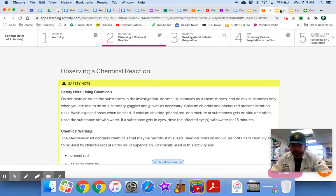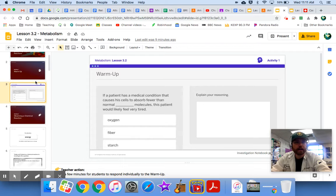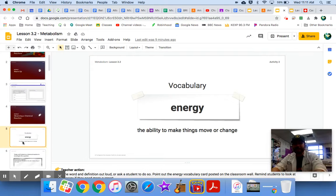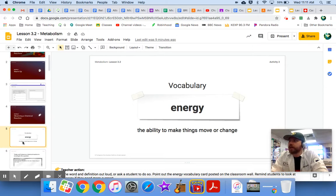Some people may have said, what about protein? Can't you make energy from protein? Well, we're not talking about that just yet. We are focused on glucose and oxygen. So, let's go back to observing a chemical reaction. Let's talk about this thing called energy. Energy is the ability to make things move or change.